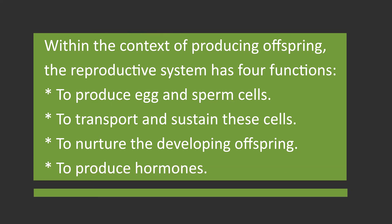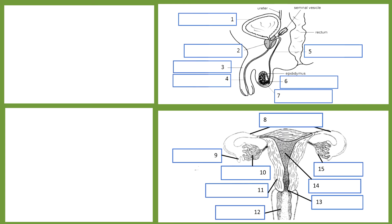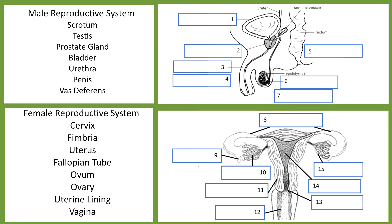In the first activity, you will identify the parts of the male and the female reproductive system given this diagram. It is not actually difficult because you are provided with a list of answers written in the box. What you are going to do is choose among those words listed in the box. I will give you five minutes to answer.